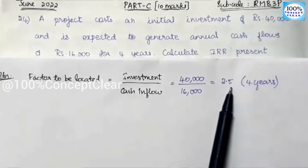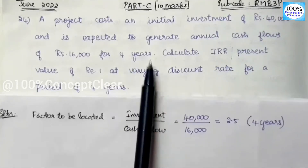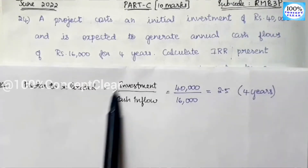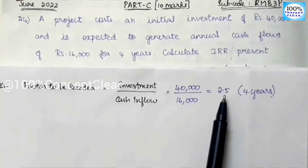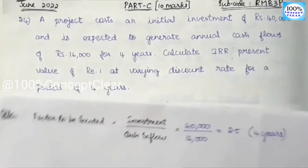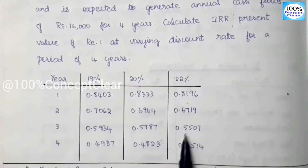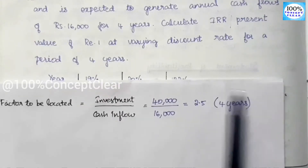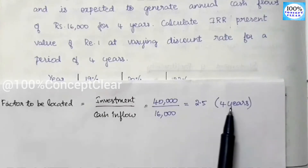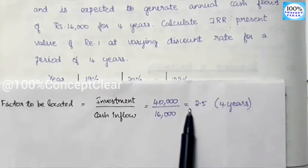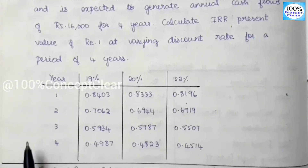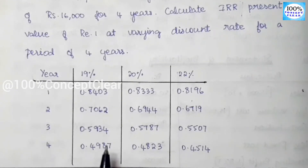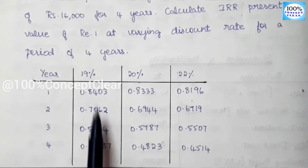So Rs.40,000 divided by Rs.16,000 gives us 2.5. That is the factor to be located, which equals 2.5. We need to locate this factor for 4 years in the present value table. There is a separate factor for each year, and we will add the rate values over 4 years.